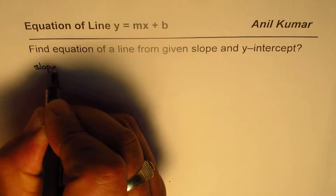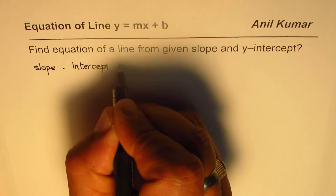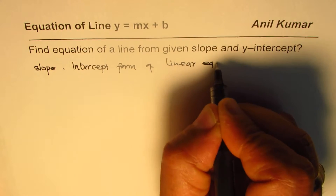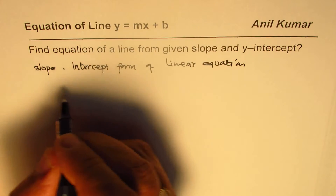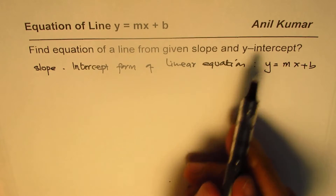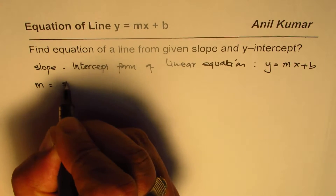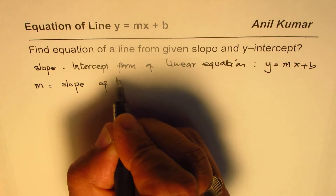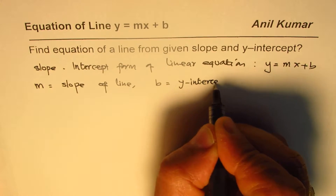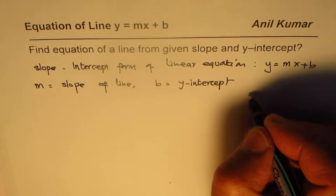The slope-intercept form of a linear equation is y = mx + b. If you're given slope and y-intercept, always use this form, where m is the slope of the line and b is the y-intercept.